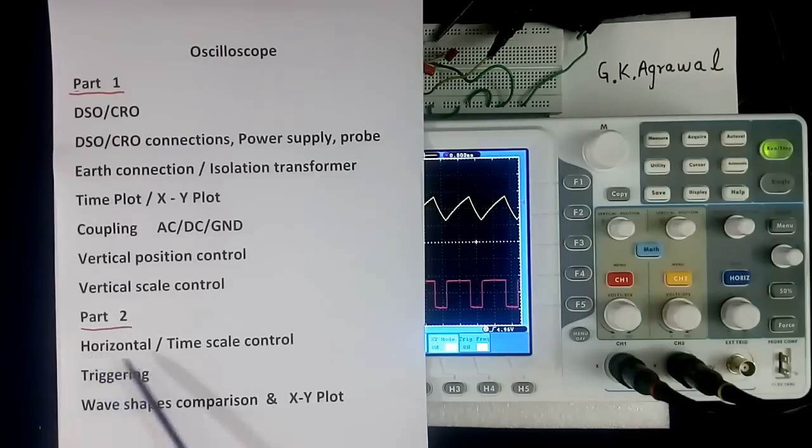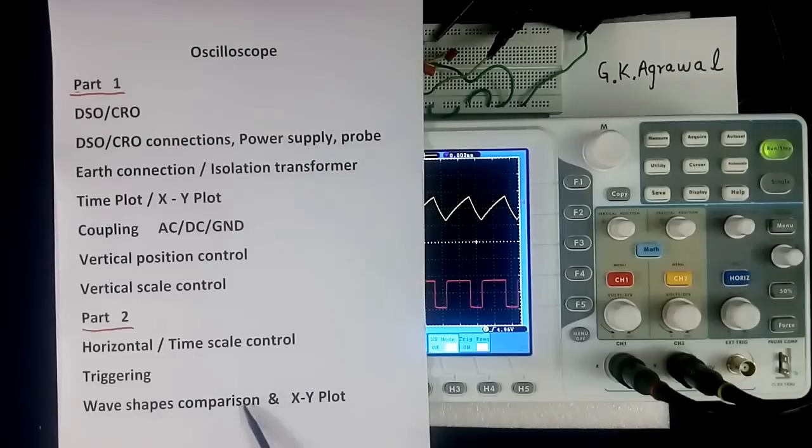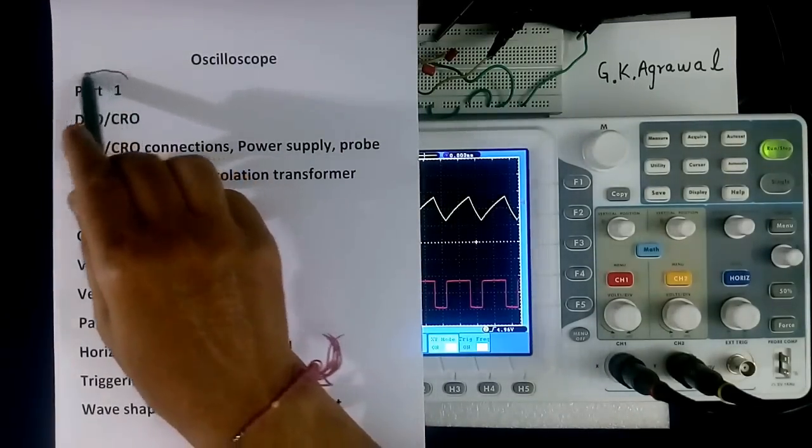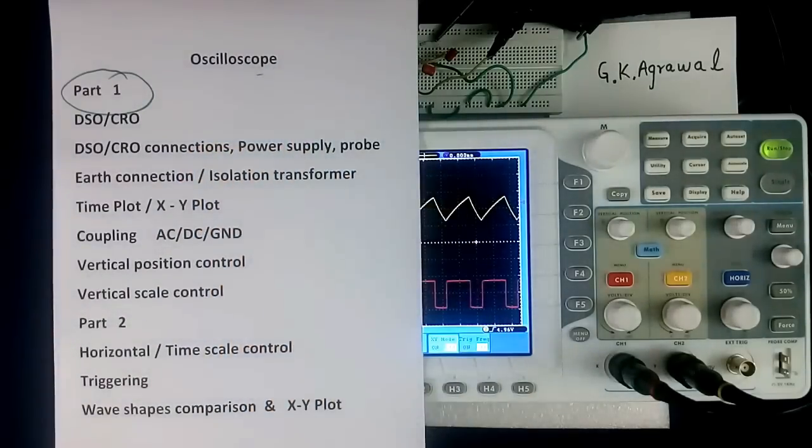In part 2, we will discuss horizontal, time scale control, triggering, wave shape comparison, and XY plot. This is tutorial part 1 of oscilloscope tutorial.